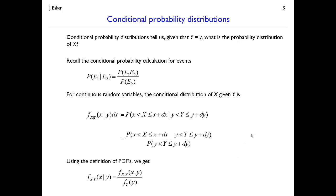We can also find conditional probability distributions — if I know the value that y takes, conditional on that, what's the probability distribution of x? This is where our earlier discussion of set theory is useful. Recall that the conditional probability of event E1 given event E2 equals the probability of the intersection of those two events divided by the probability of E2. We're going to take that same convention and apply it to these PDFs, recognizing that PDFs tell us about probabilities of events — events of x and y taking particular numerical values.